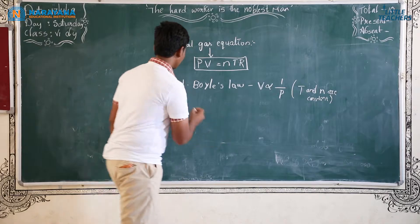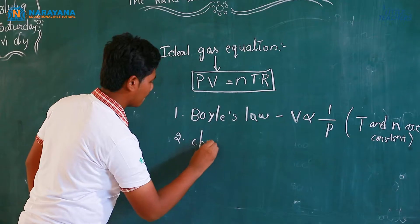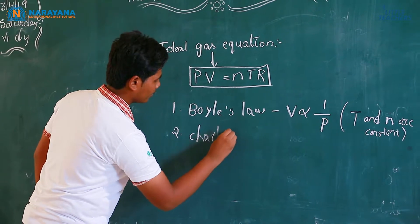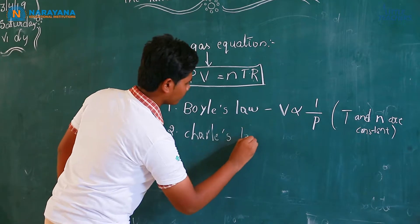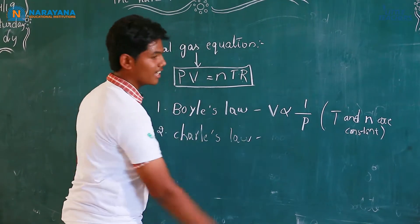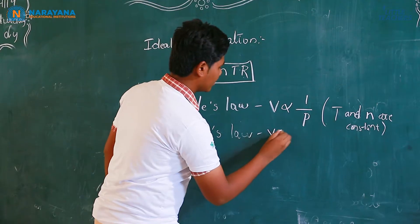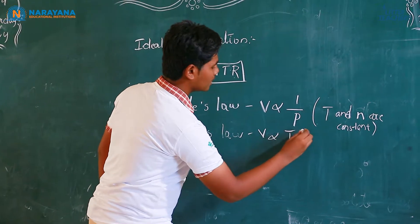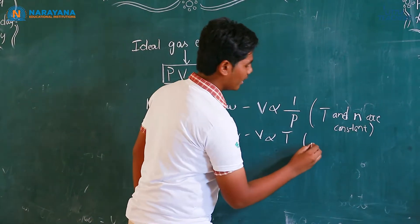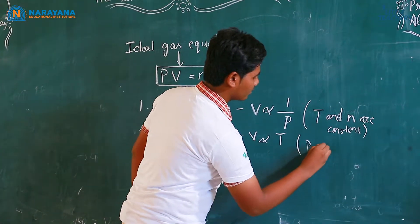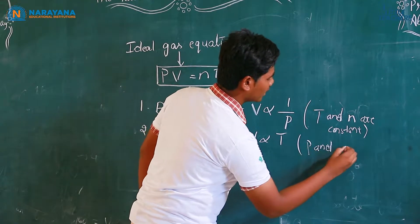Number two, Charles' law. This law states that volume of a gas is directly proportional to absolute temperature where pressure and number of moles becomes constant.